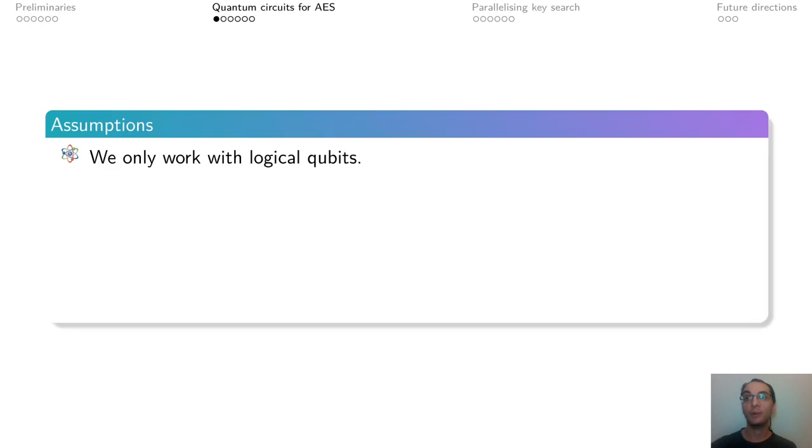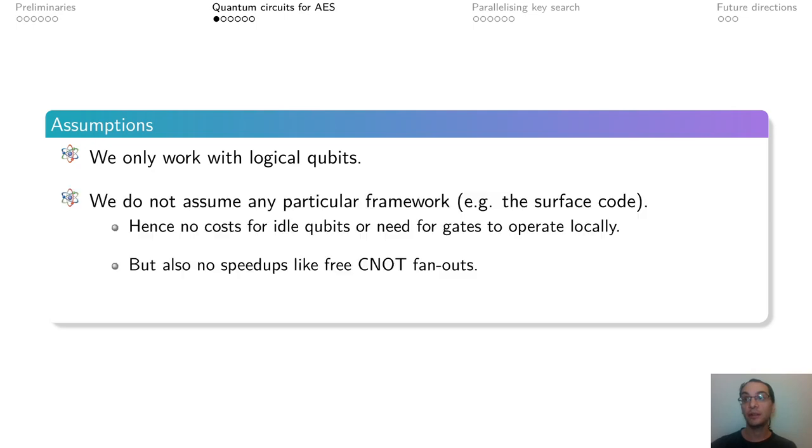We also make the following assumptions. We only work with logical qubits. We don't assume a particular framework, such as error correcting using the surface code. And this has two effects. On one hand, we ignore the cost for error correction or the need to apply gates to physically nearby qubits. On the other hand, we don't get speedups, such as free CNOT fanouts.